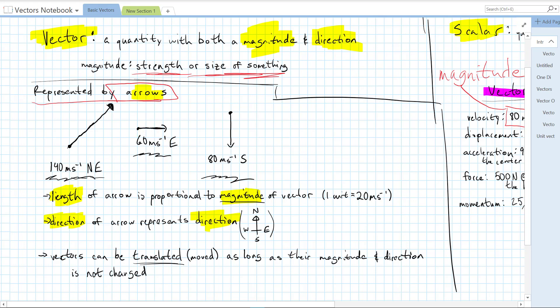60 meters per second east. Our arrow points east. 80 meters per second south. Our arrow points south. The length of the arrow is proportional to the magnitude of the vector. And notice that these are all scaled the same way. So one square unit is equal to 20 meters per second. The direction of the arrow is just the direction.